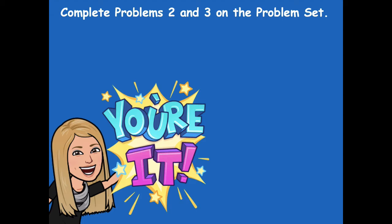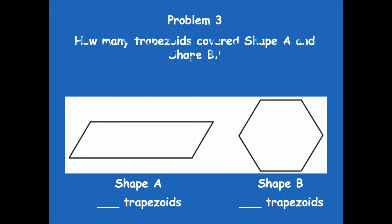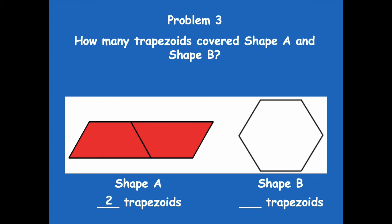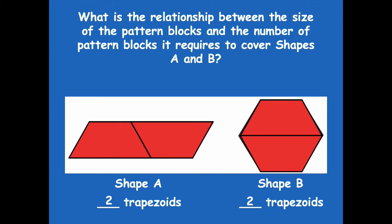Pause the video, complete problems two and three, then click play when you're finished. For problem three we're talking about trapezoids to cover shapes A and B: two trapezoids cover shape A and two trapezoids cover shape B. When we used triangles we needed six, but with trapezoids we only needed two. The larger the pattern block, the fewer you'll need to cover the shape.